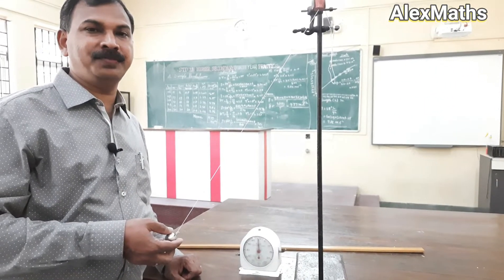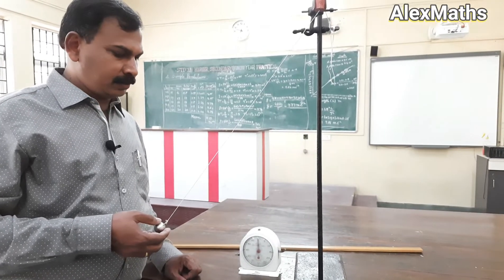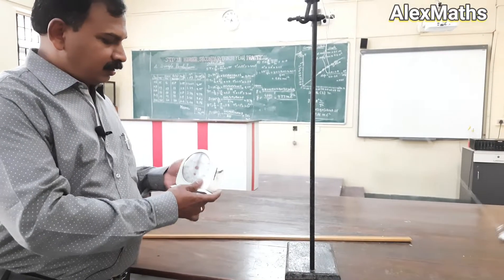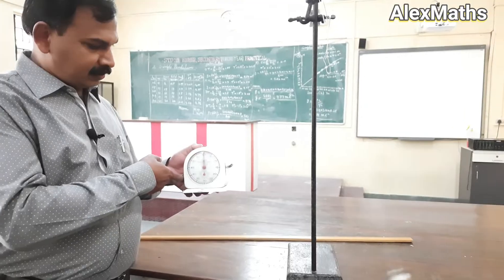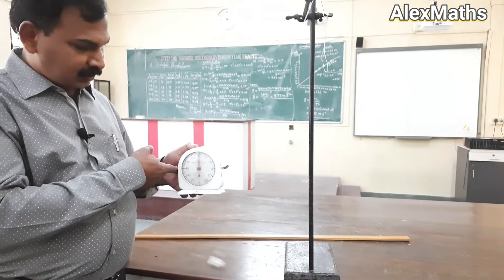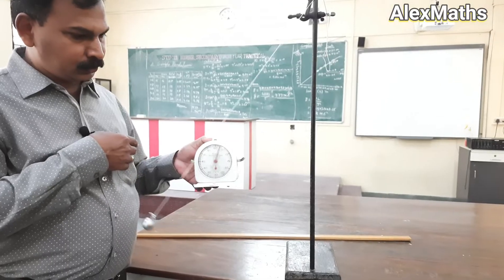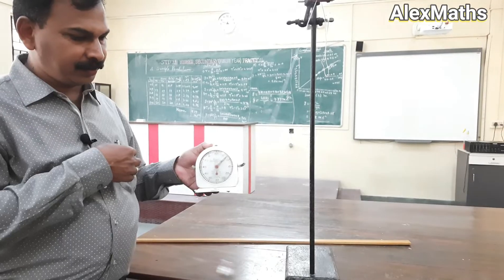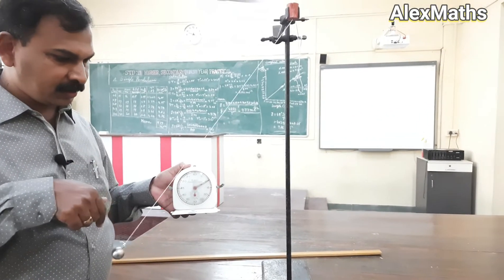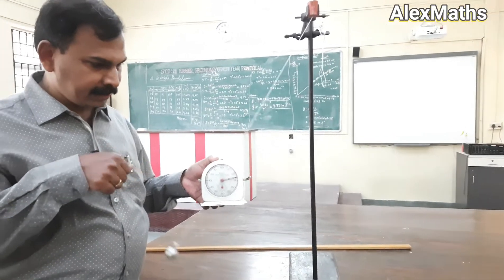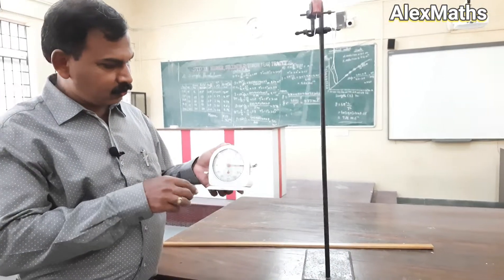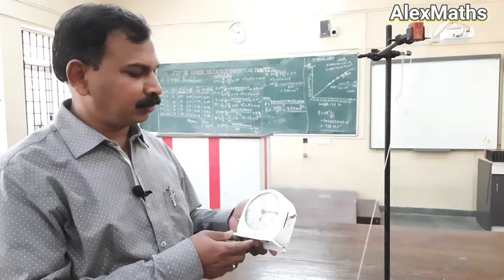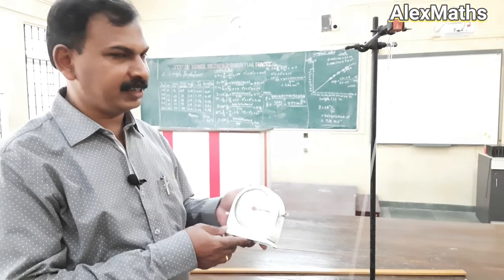I am going to find out the time taken for 10 oscillations. Make the pendulum oscillate, then reset the stop clock and start it. While starting, count: 1, 2, 3, 4, 5, 6, 7, 8, 9 and 10. Once it reaches 10, stop and measure the time for 10 oscillations. I am getting 15 seconds.